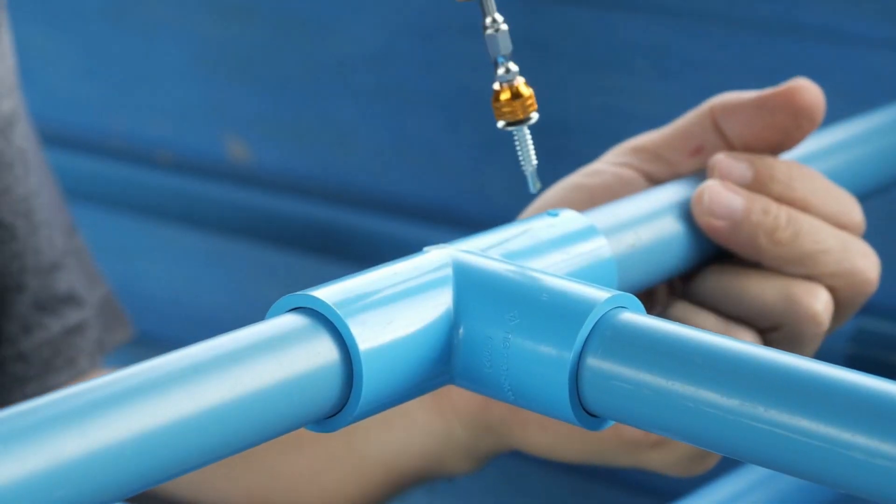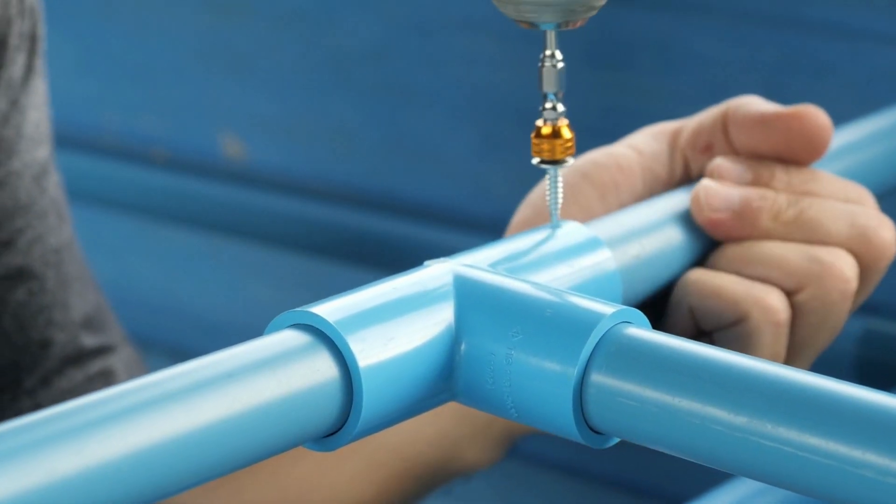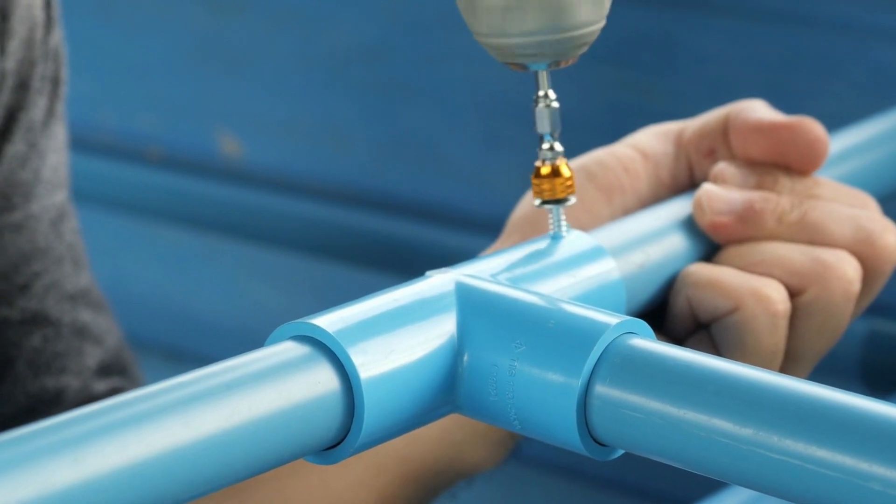These are the steps and the way. Now you can understand how to slope PVC drain pipe.